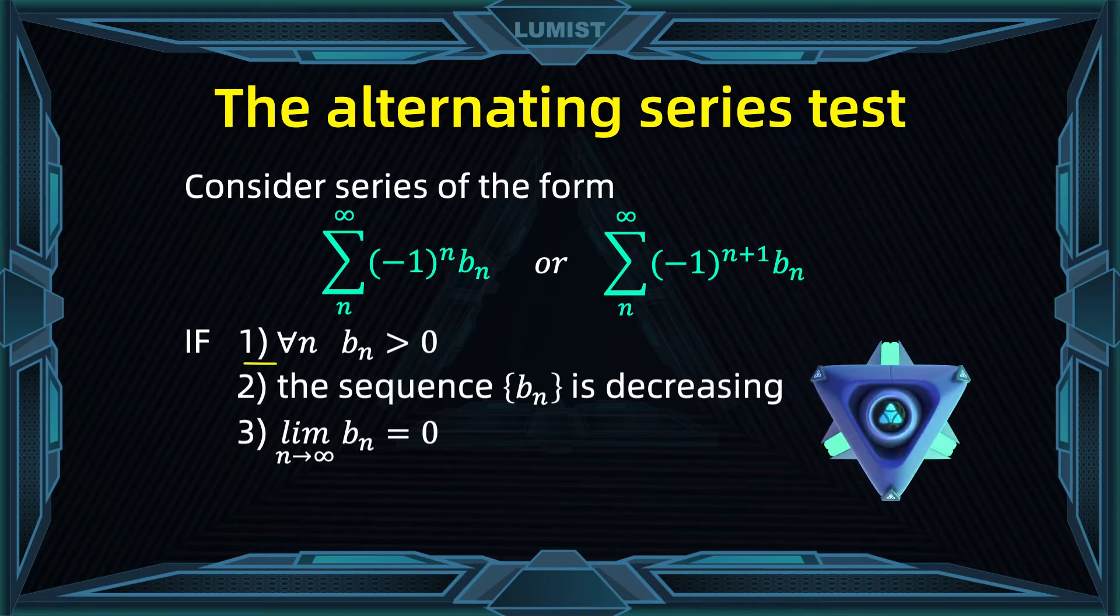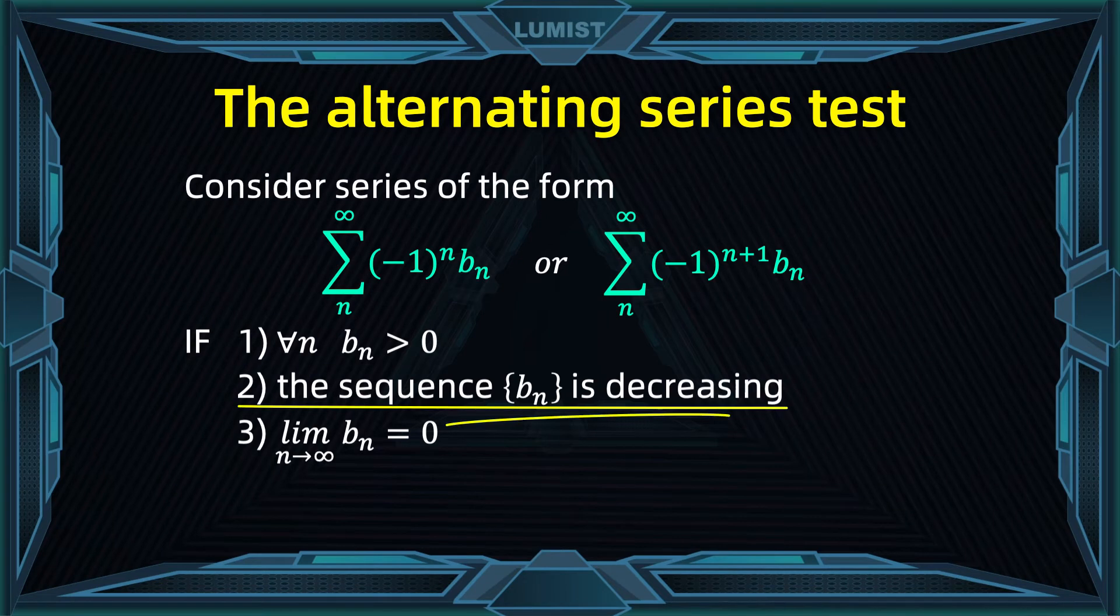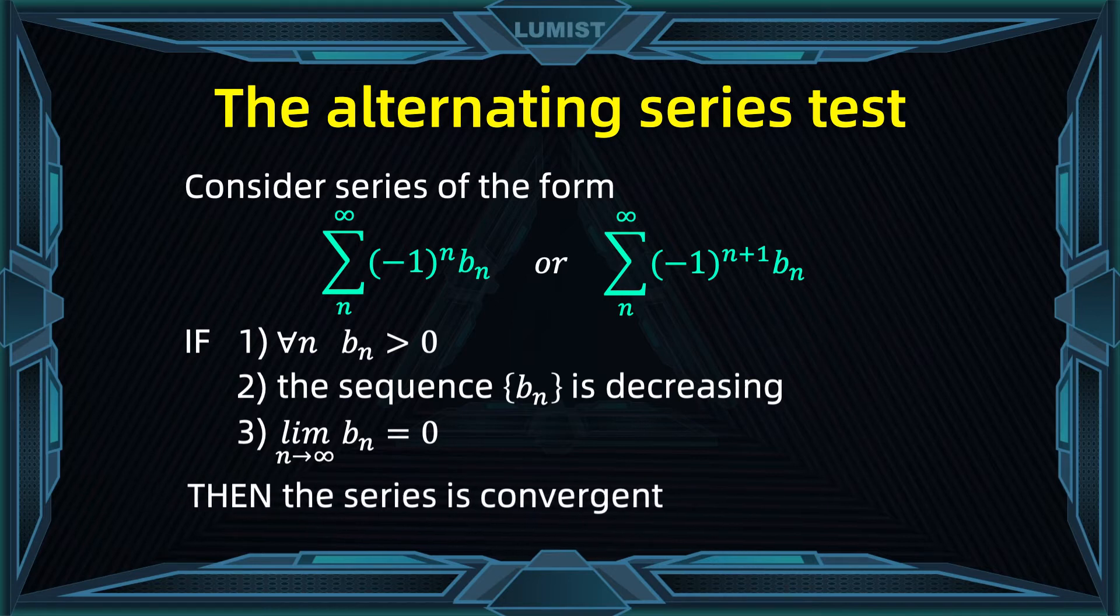One, bn is always positive. The sequence bn is decreasing and it converges to zero. Then the alternating series is convergent.